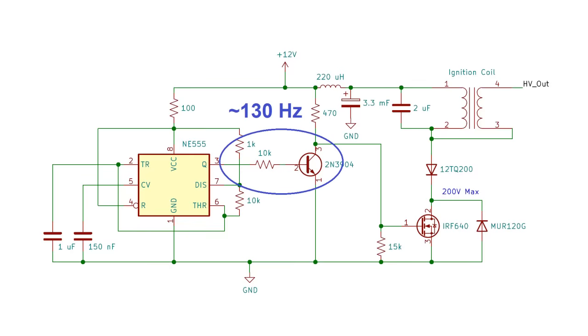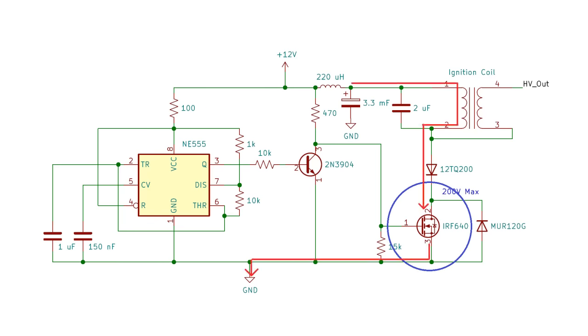In this circuit, a 555 timer creates a square wave output of around 130 hertz, which is amplified by a small transistor and then used to drive a MOSFET, which turns current to the primary coil on and off with a waveform that looks something like this.